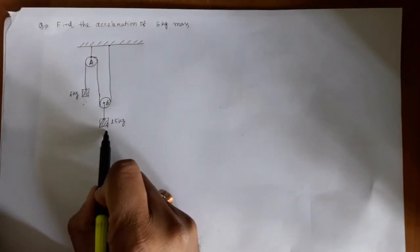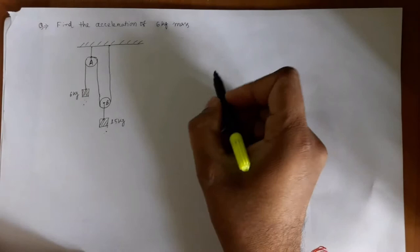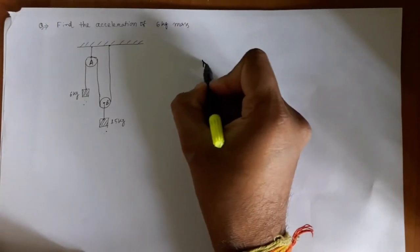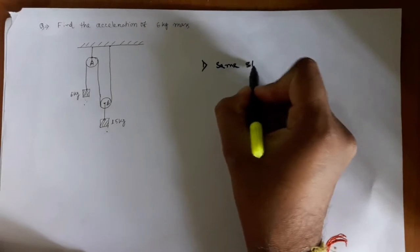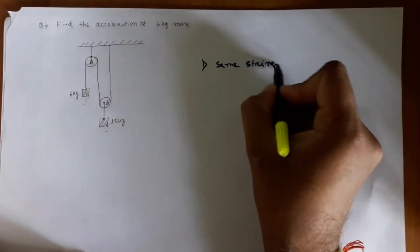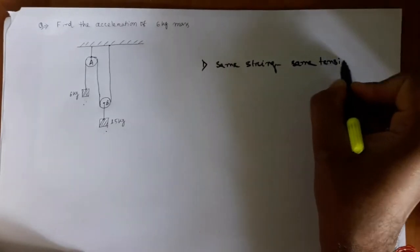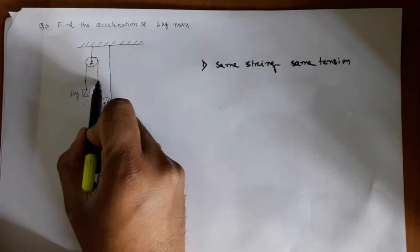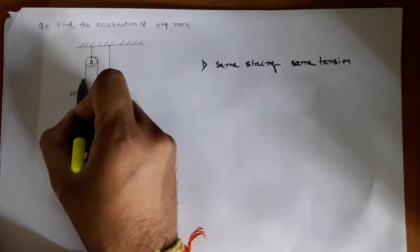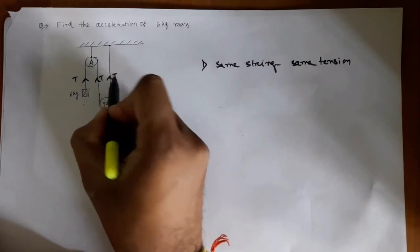Hello, we are given a problem where we have to find the acceleration of the 6 kg mass. Two masses are connected, one is 6 kg and one is 15 kg. Before doing such problems of pulley-connected masses, we have to keep two things in mind. First one: same string, same tension. You can see here it is the same string.